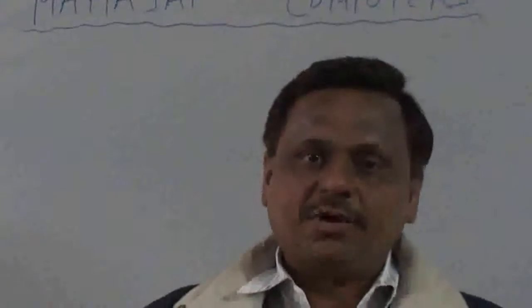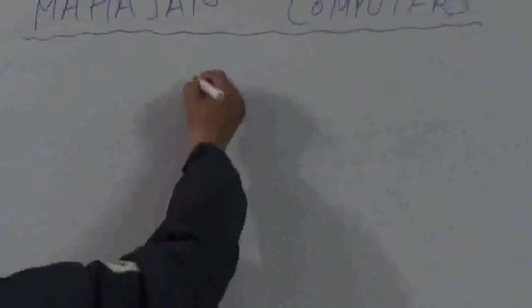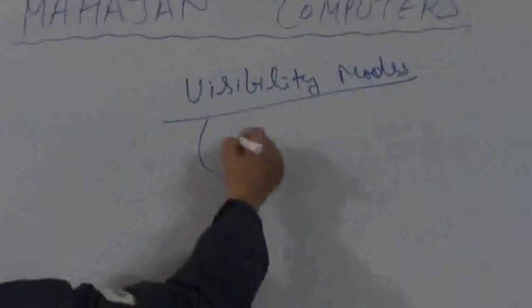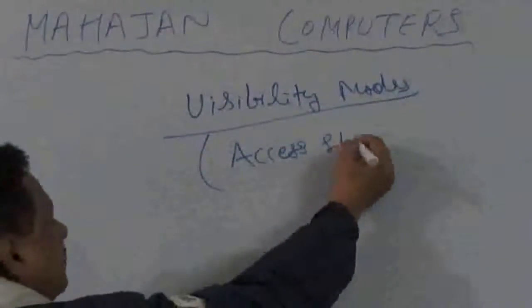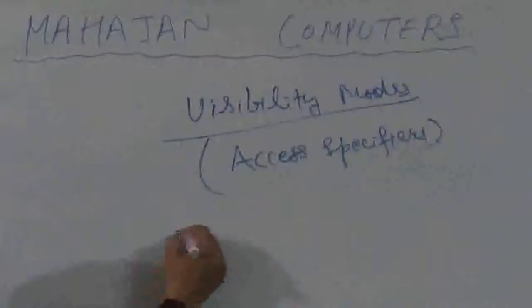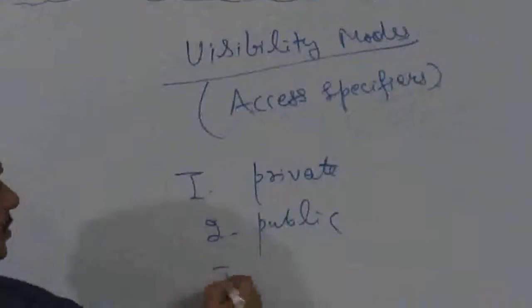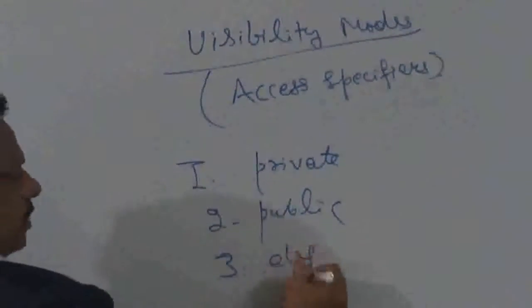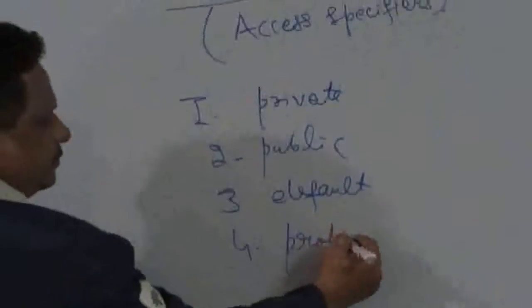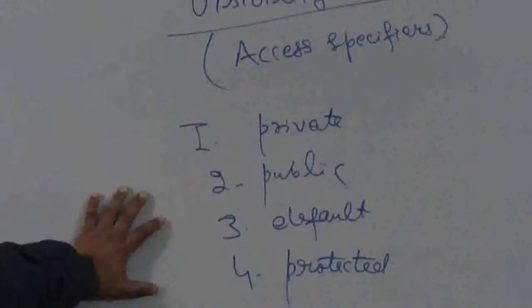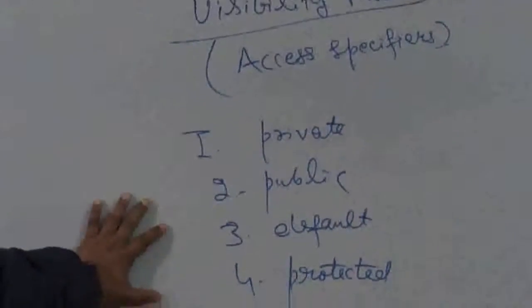Today we are going to discuss about access specifiers in Java, and at the same time we will be discussing about packages, the concept of packages in Java. Visibility modes, which are also termed as access specifiers, are of four types: private, public, default, and protected. In order to make the concept of access specifiers clear, first we will have to discuss about the concept of packages in Java.